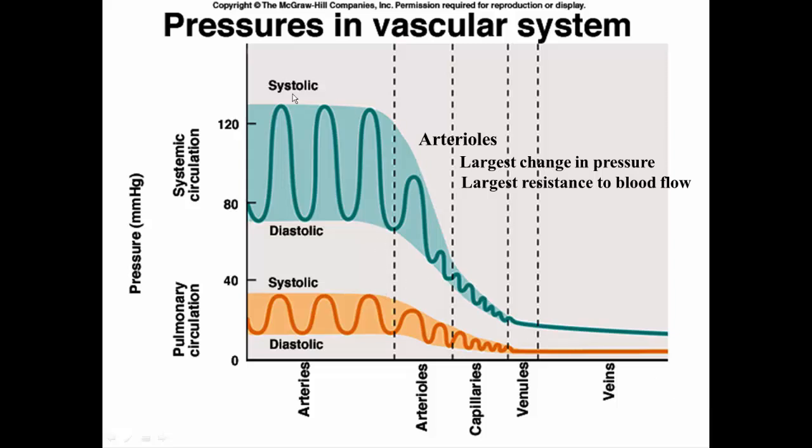When blood leaves the heart, you have a very large pulsating pressure, so you get the measurements of systolic and diastolic. That pulsating pressure declines as you move farther from the heart, until you finally get to the venules and veins where the pulsating pressure has dissipated. You no longer see it.